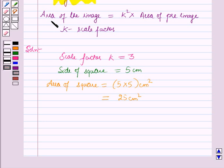And also according to the formula which is given in the key idea, area of the image is equal to k square times area of the pre-image.